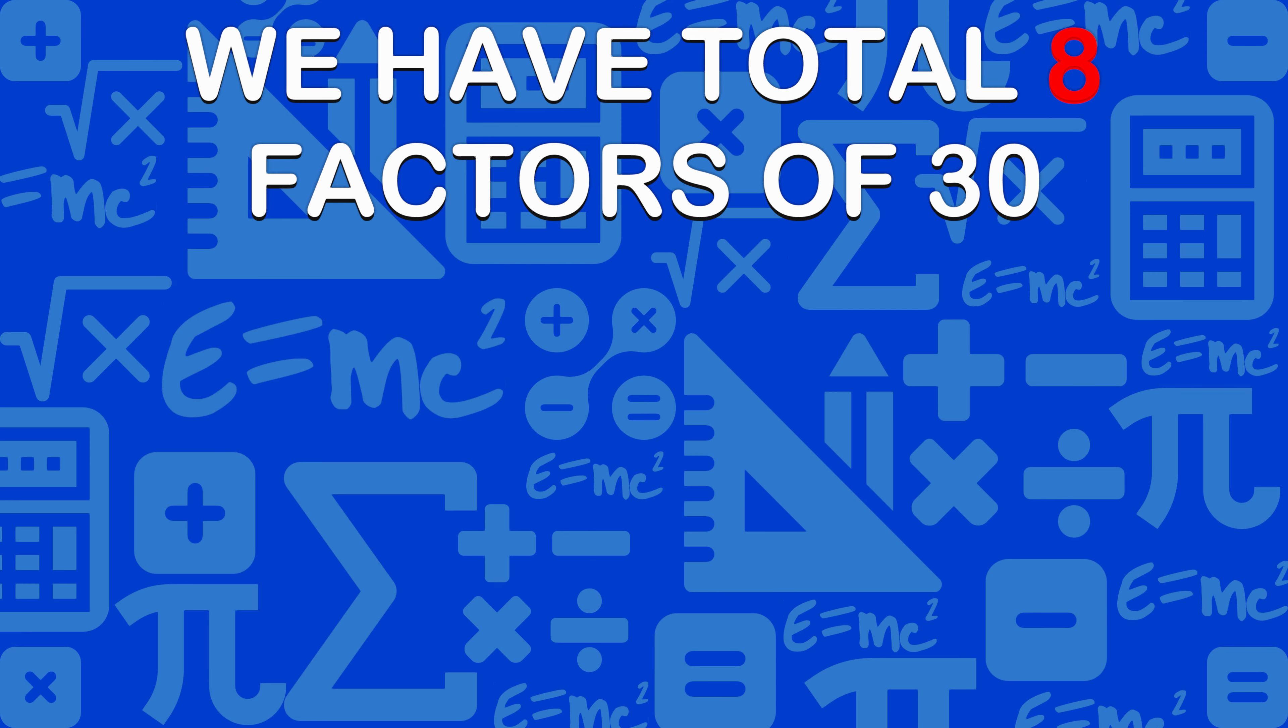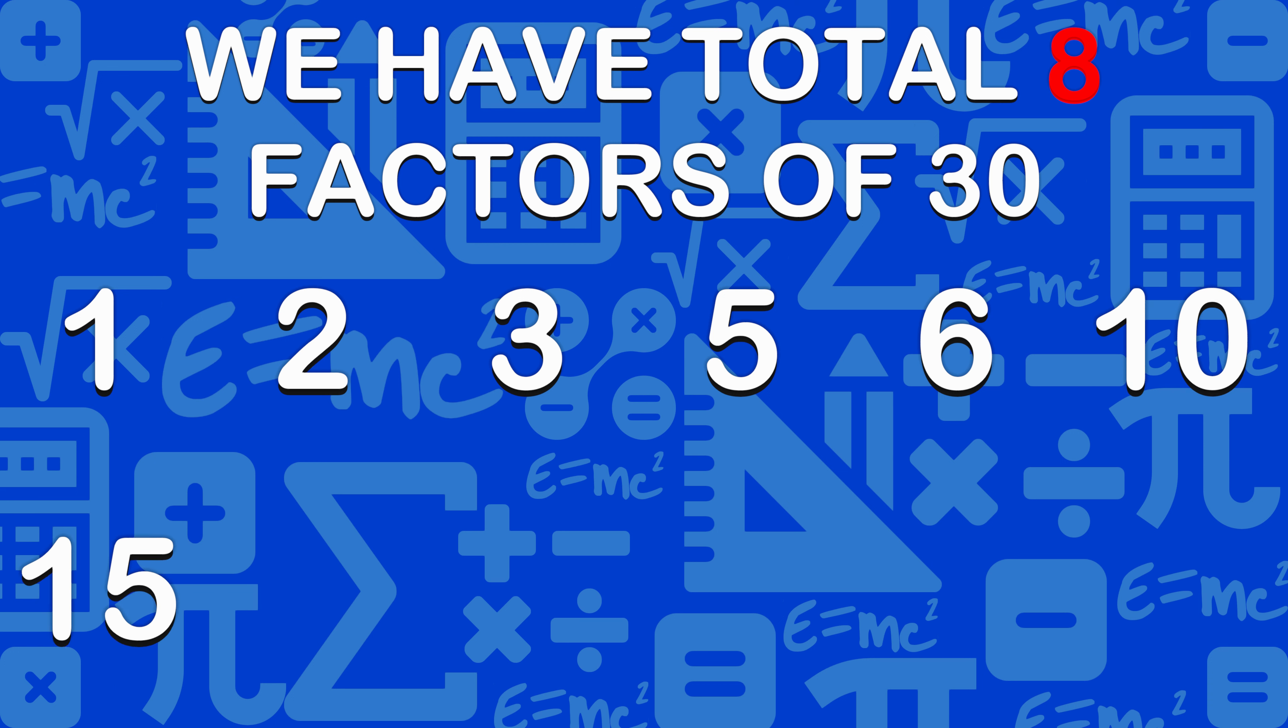We have total 8 factors of 30: 1, 2, 3, 5, 6, 10, 15, and 30.